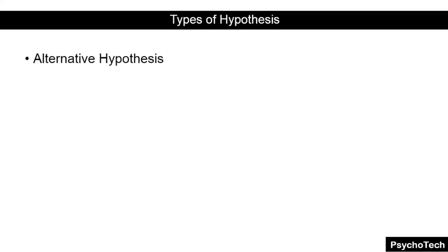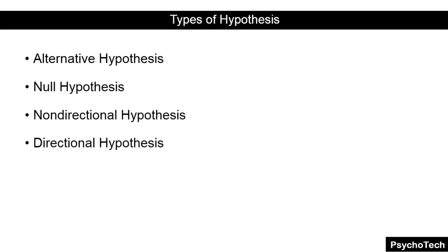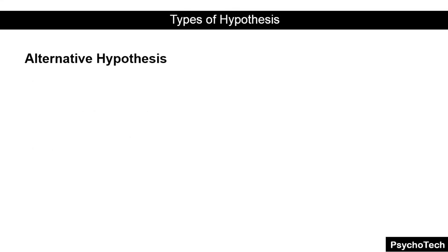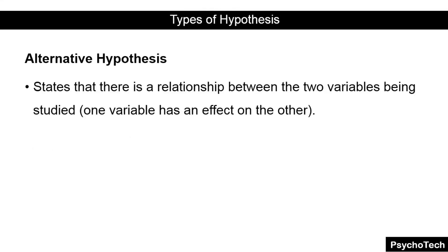The four types of hypothesis are: alternative hypothesis, null hypothesis, non-directional hypothesis, and directional hypothesis. I am going to discuss all these four types in brief. First of all, let us start with the alternative hypothesis. The alternative hypothesis states that there is a relationship between the two variables.